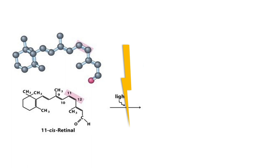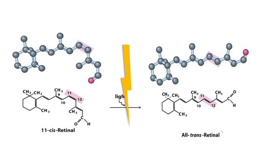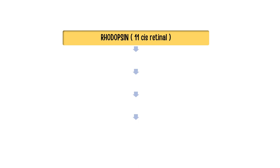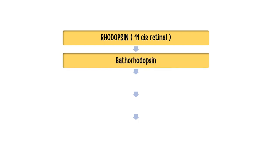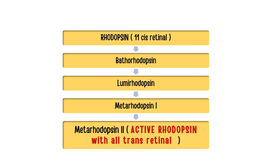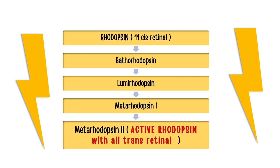When light strikes the retina, inside the rhodopsin molecule, the 11-cis retinal undergoes a conformational change at the carbon 11 and carbon 12 bond, converting to all-trans retinal. These two are isomers — same chemical composition but different shapes. This conversion occurs through a series of steps: rhodopsin → bathorhodopsin → lumirhodopsin → metarhodopsin 1 → metarhodopsin 2, which is the active form containing all-trans retinal. All this happens in the presence of light.